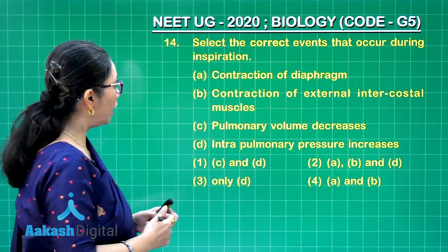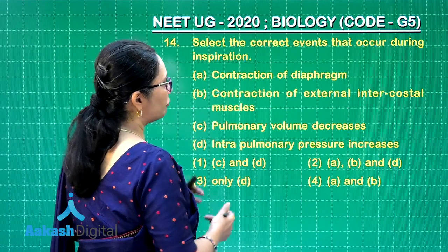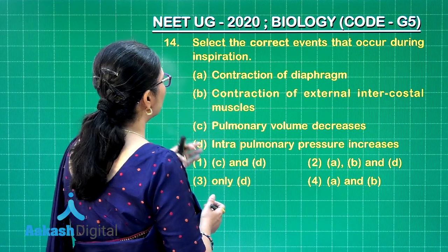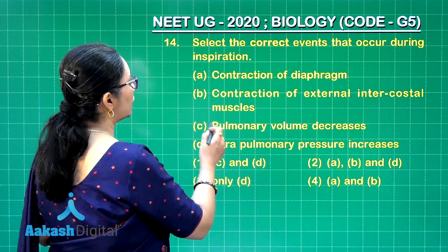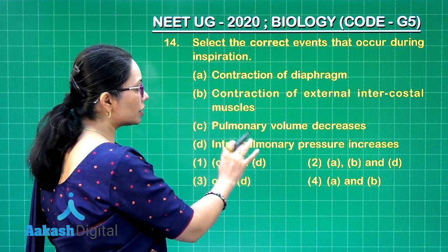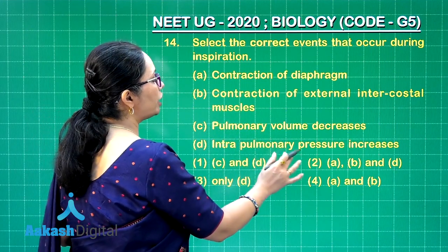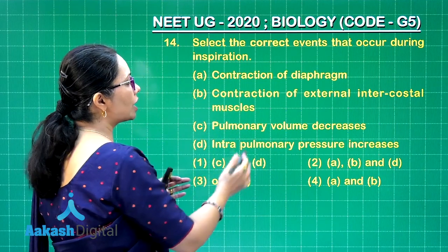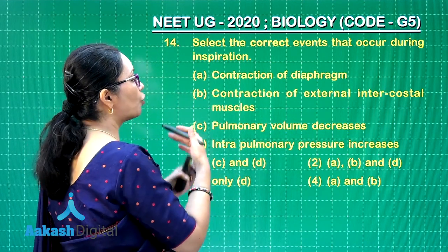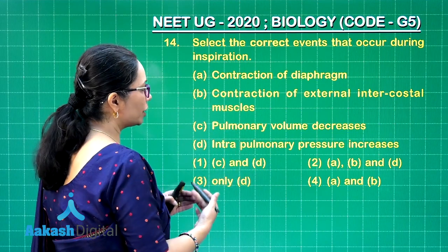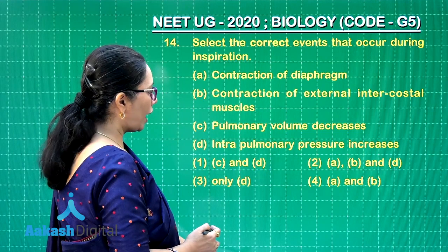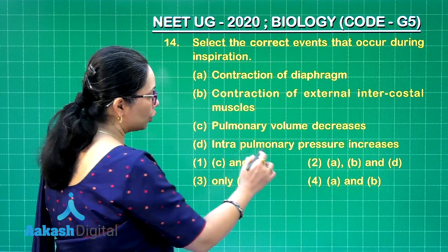Evaluating the options: contraction of the diaphragm is correct, and contraction of external intercostal muscles is also correct. However, 'pulmonary volume decreases' is the opposite of what happens, and 'intra-pulmonary pressure increases' is also wrong because volume increases and pressure decreases. Therefore only options A and B are correct.